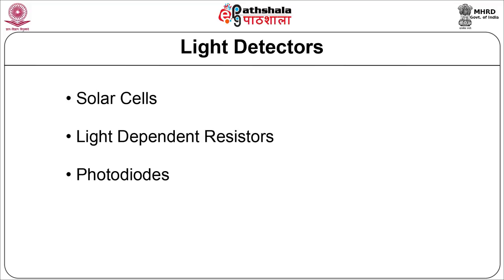Photodiodes are high impedance devices that are usually reverse biased for improved performance. Phototransistors employ the principle of photodiodes but with the amplifying action of the transistor, which makes the device more sensitive.